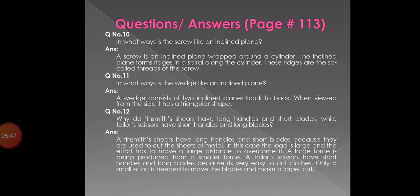The last question is: why do tin smith shears have long handles and short blades, while tailor scissors have short handles and long blades? Answer: tin smith shears have long handles and short blades because they are used to cut sheets of metal. The load is large and the effort has to move a large distance to overcome it, producing a large force from a smaller force. A tailor's scissors have short handles and long blades because it is very easy to cut clothes — only a small effort is needed to move the blades and make a large cut.